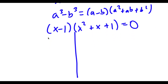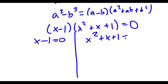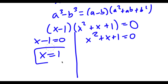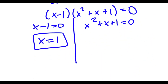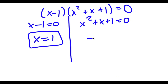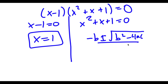This gives me two equations: x minus 1 equals 0, and x squared plus x plus 1 equals 0. For x minus 1 equals 0, we get x equals 1, which we already got before. And for x squared plus x plus 1 equals 0, we can use the quadratic formula, which is negative b plus or minus the square root of b squared minus 4ac, all over 2a.